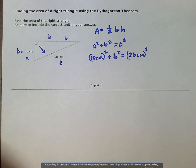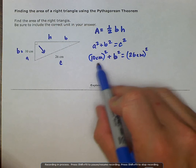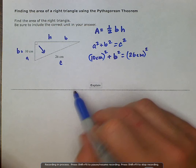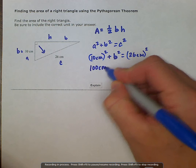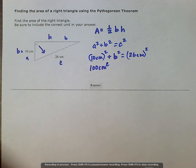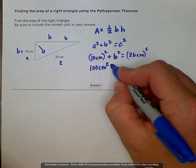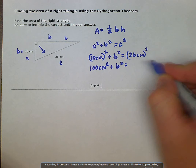Okay, when we square this, we know 100 squared, or 10 squared is 100. And the centimeters also get squared, which is our units, plus b squared is equal to 26 squared. Let's go ahead and work that out on our calculator.